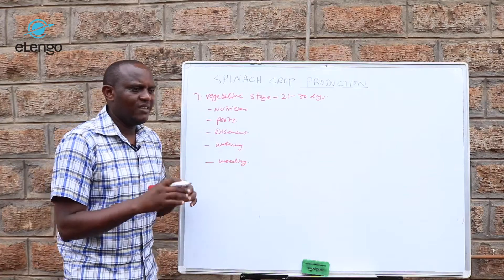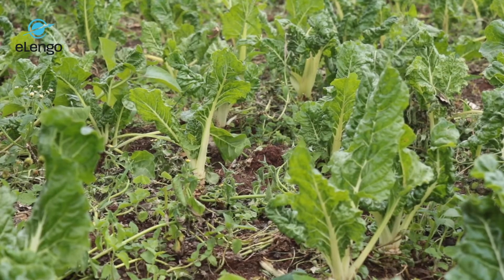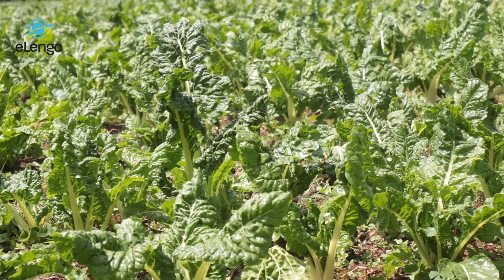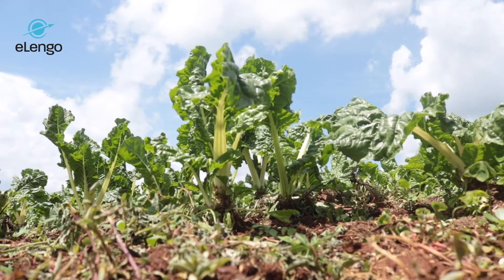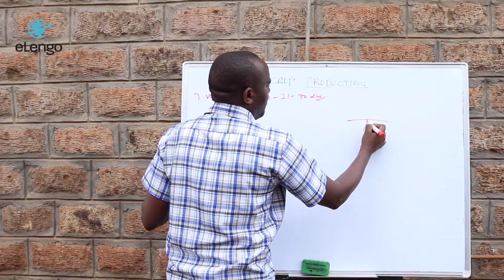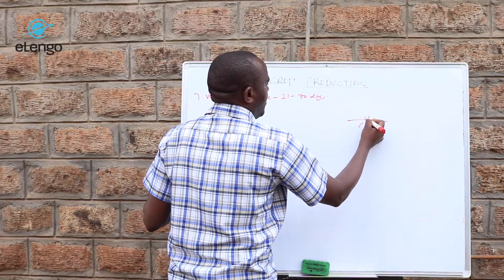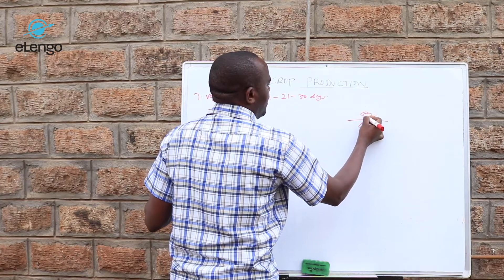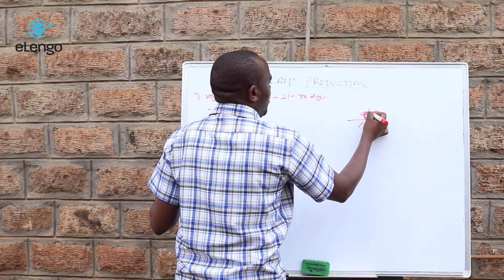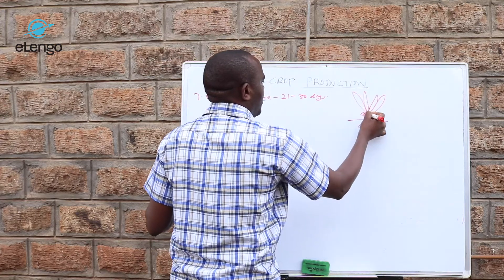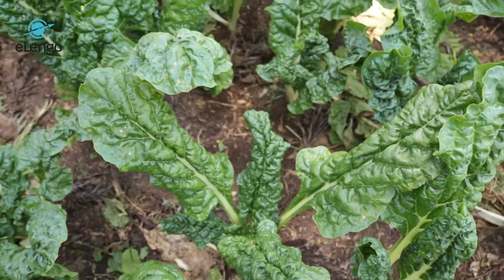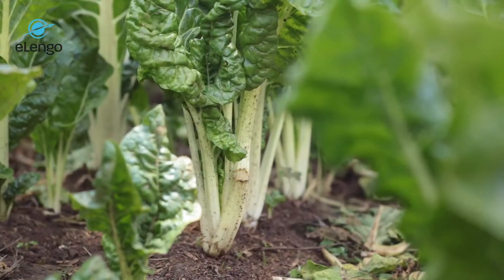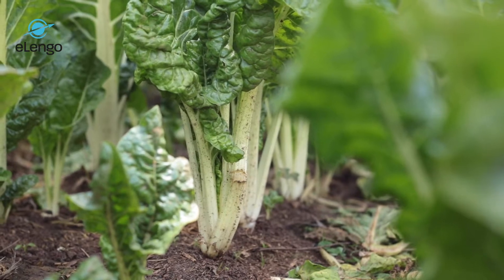In the vegetative stage, the plant has already established in the first 21 days, but now it is growing a lot of vegetative material — a lot of leaves — it is branching and also growing the stem. When you look at a spinach crop, we have the roots in the ground, then the stem, and from there the various leaves coming up from the stem.